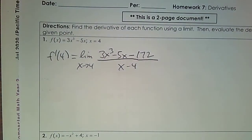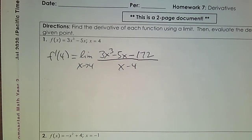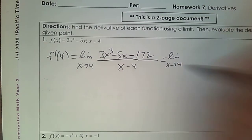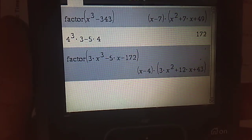Then I'm going to subtract that, and then x subtract 4 in the denominator. Next, I'm going to factor this. I factored with my calculator, and you'll have a calculator that you can factor with too. So what I did with our new calculator — I'll just show you a sneak peek — is I typed in 3x cubed minus 5x subtract 172.